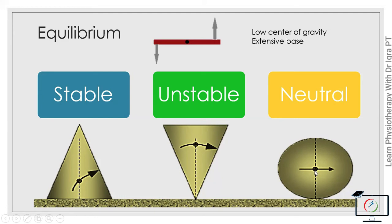In neutral equilibrium, under the displacement force, the center of gravity remains the same. For example, a ball rolling on the floor. The object is displacing, but the center of gravity remains the same.